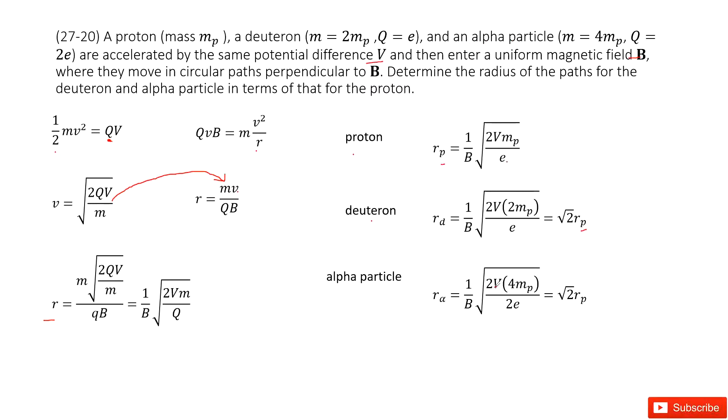Then for alpha particles, the mass becomes 4mp and the charge becomes 2e. So this 2 and this 4 becomes 2, which cancels to √2. You can still write it as Rα = √2 Rp. Thank you.